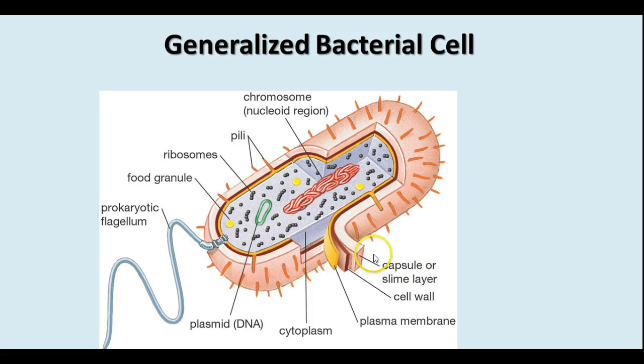Sometimes there's a capsule or a slime layer on the outside of the cell wall, and the plasmid, which is a separate ring of DNA.